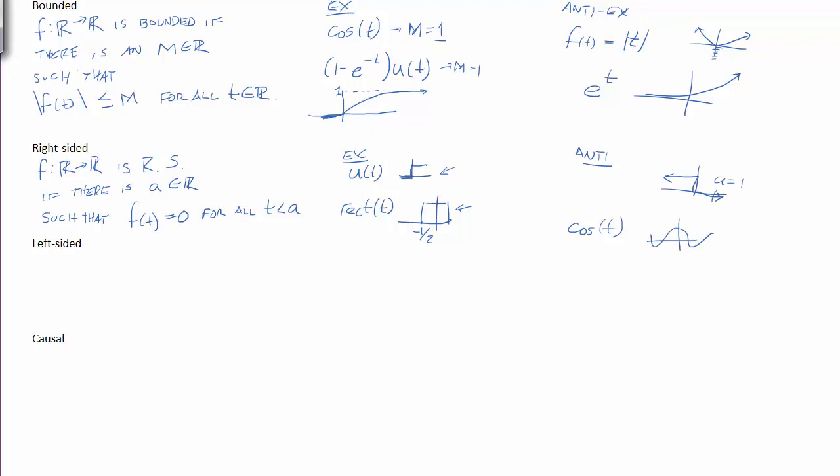Which brings me to left-sided. So if we know the definition for right-sided, the definition for left-sided follows pretty much directly. If there is a b in the real number line such that f of t equals 0 for all t greater than b. So this is, there has to be a right end point in order for the signal to be left-sided.